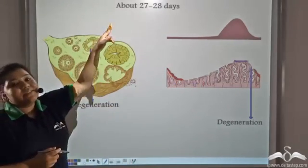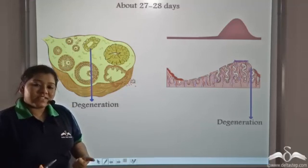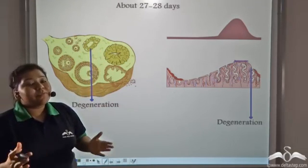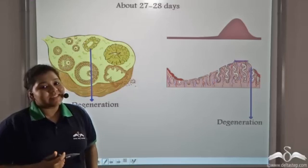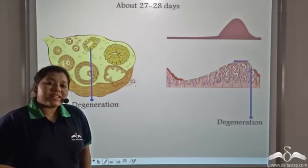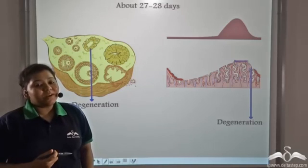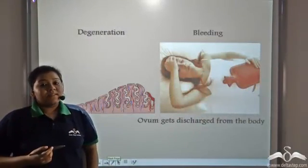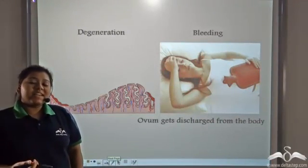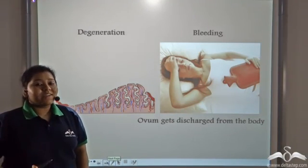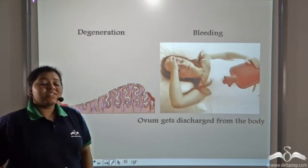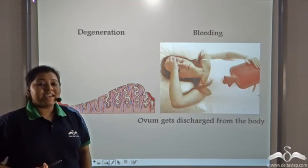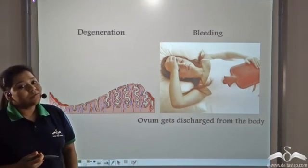After twenty-seven to twenty-eight days, if fertilization does not take place, the corpus luteum degenerates and the level of progesterone in the body automatically decreases. As a result, the endometrial layer is not maintained anymore and is finally shed. The endometrial lining ruptures, the blood vessels rupture, and the unfertilized egg is discharged from the body.